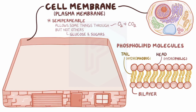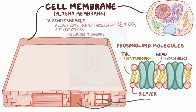Fortunately, we have the doors and windows on this apartment, and they're made of special protein channels that are essentially tiny tunnels through the phospholipid bilayer. These channels allow water and specific ions like sodium and potassium to come in and out of the cell.